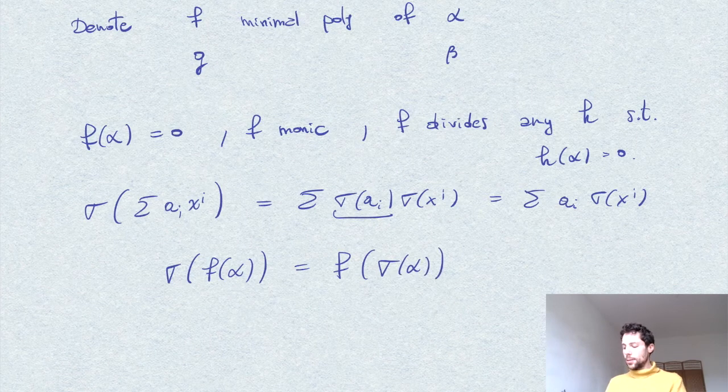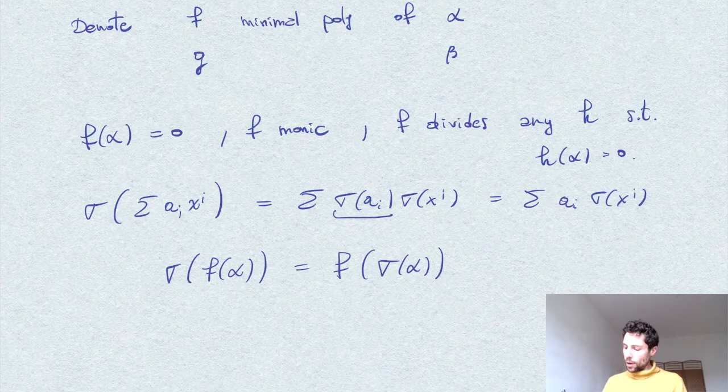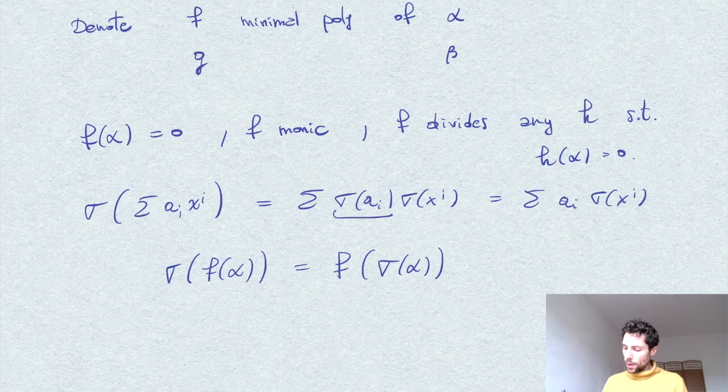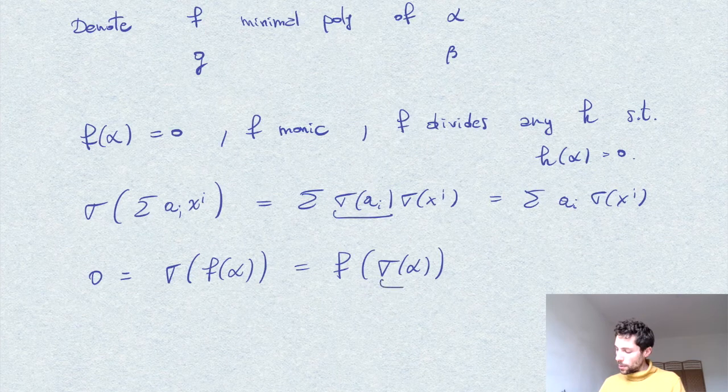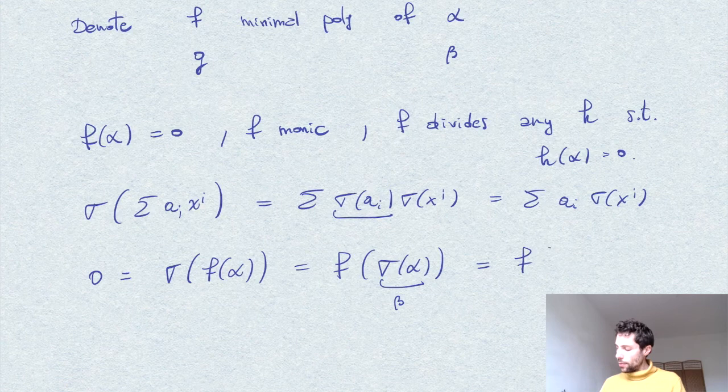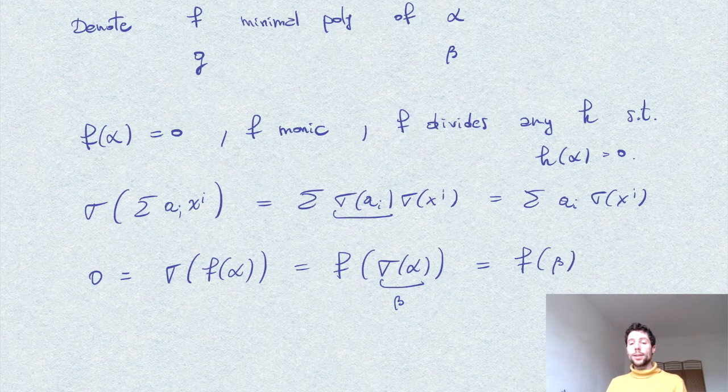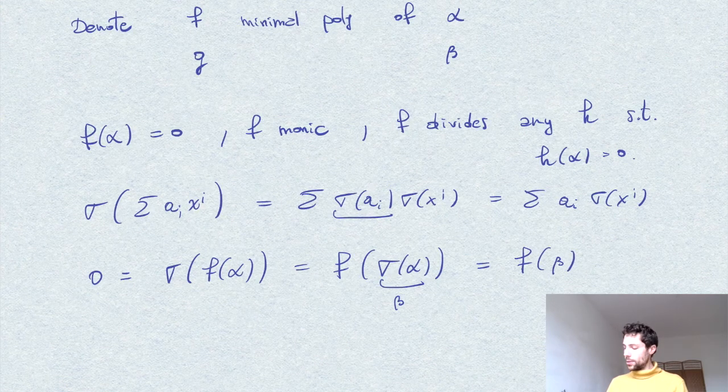Now, if we started with our minimum polynomial f for α, so f(α) = 0, therefore this is 0. And f(σ(α)), this element by our assumption is equal to β, so we see that f has also β as a root.